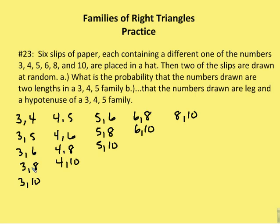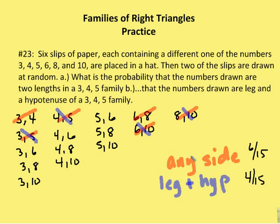So we go through the list, and I'm going to write down all the possibilities. I have 3, 4, then 3, 5, then 3, 6, then 3, 8, then 3, 10, and so on and so forth until I list all of the different possibilities. Then I'm going to identify for part A, what is the probability that any of the numbers drawn are two lengths in the 3, 4, 5 family.